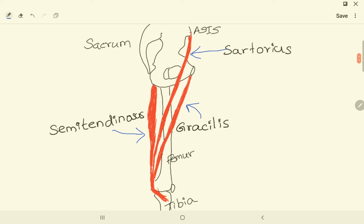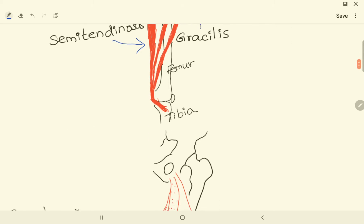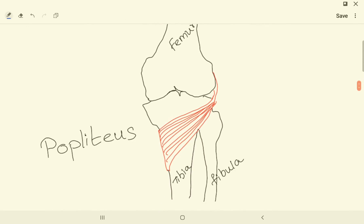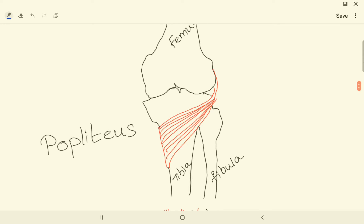Here are the hamstring muscles. We have semitendinosus, semimembranosus, and biceps femoris. You can see that here is the popliteus, a leg muscle.